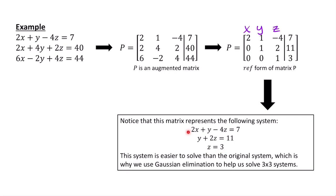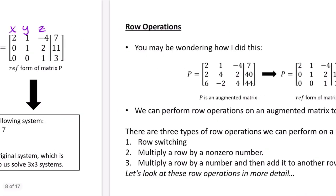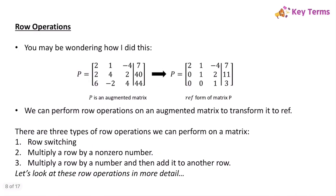Now if we work on solving this system algebraically, it's going to be much simpler than what we started with. The key to transforming the augmented matrix is to use row operations. Row operations are operations we're allowed to perform on a matrix, and there are three types: row switching, multiplying a row by a non-zero number, and multiplying a row by a number and adding it to another row.